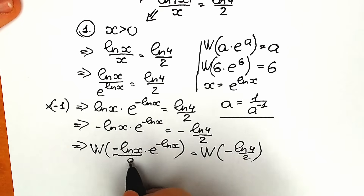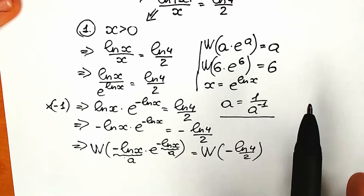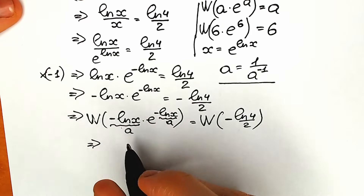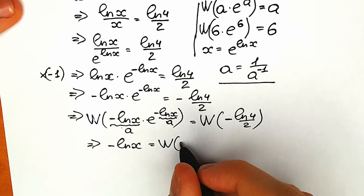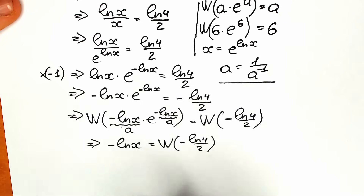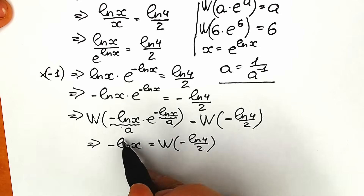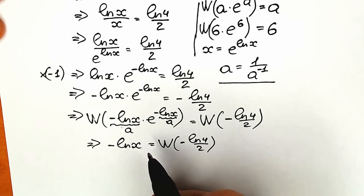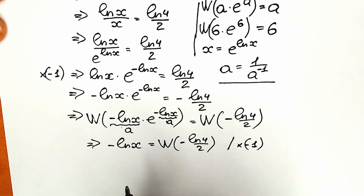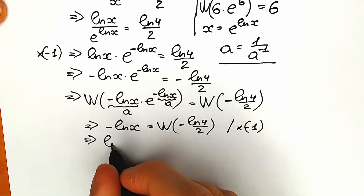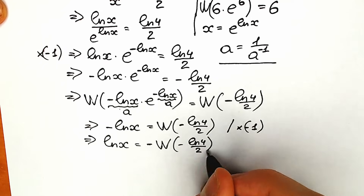Since −ln(x) is our a, and we have a·e^a on the left, the Lambert W function simplifies the left side to just −ln(x). So on the left side we have −ln(x), and on the right side we have W(−ln4 / 2). Multiplying both sides by −1, we get: ln(x) = −W(−ln4 / 2).